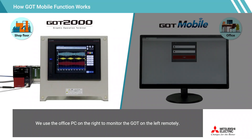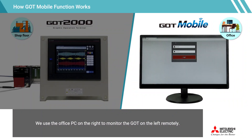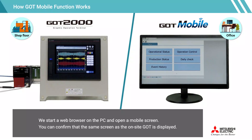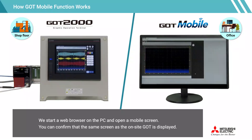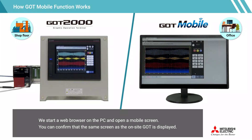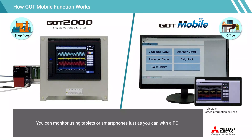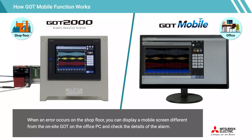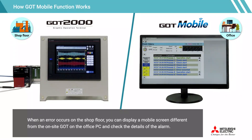We use the office PC on the right to monitor the GOT on the left remotely. We start a web browser on the PC and open a mobile screen. You can confirm that the same screen as the on-site GOT is displayed. You can also monitor using tablets or smartphones just as you can with a PC. When an error occurs on the shop floor, you can display a mobile screen different from the on-site GOT on the office PC and check the details of the alarm.